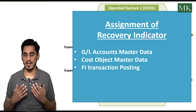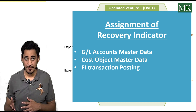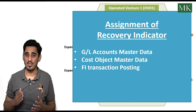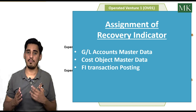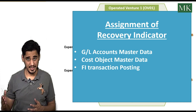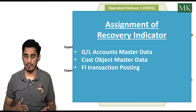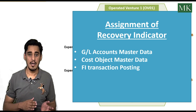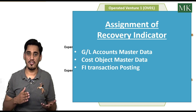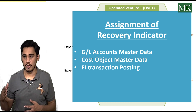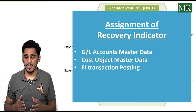The recovery indicator is assigned in the GL account master data, and can also be assigned in the cost object master data. In case of both assignments, the system gives priority to the GL account master data. You can also change or assign a new recovery indicator at the time of FI posting. The cost object used is WBS element or project OV01, which is explained in the project structure video.